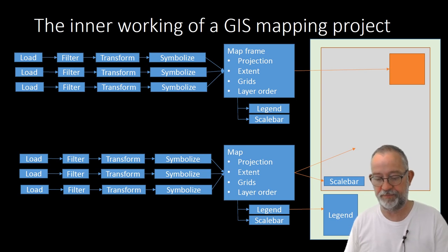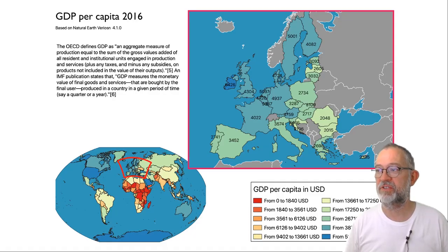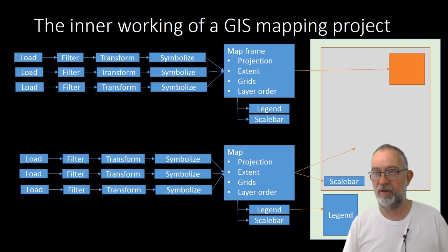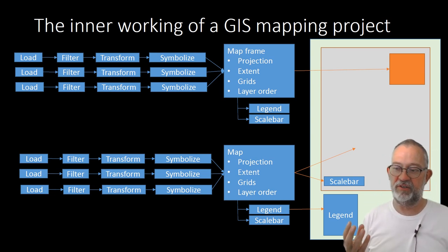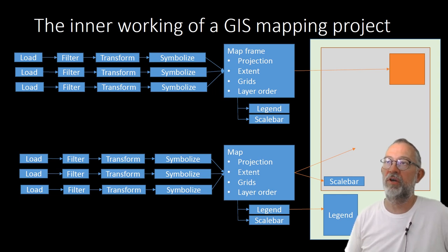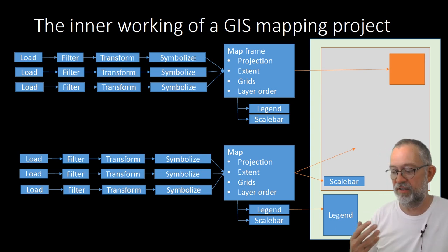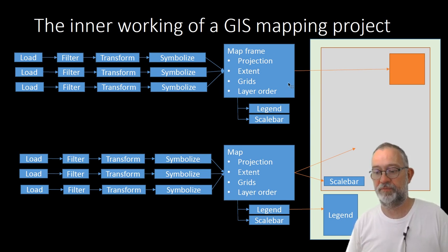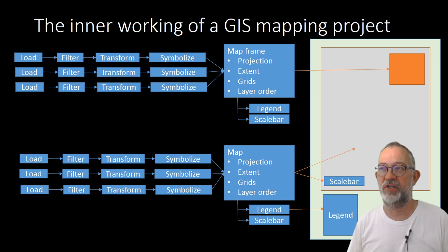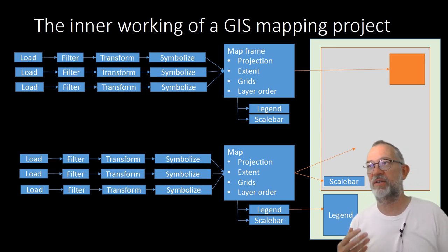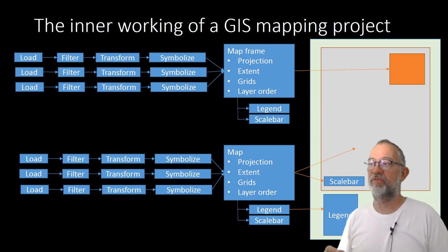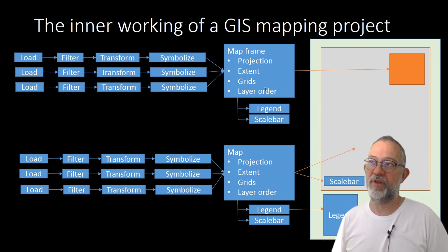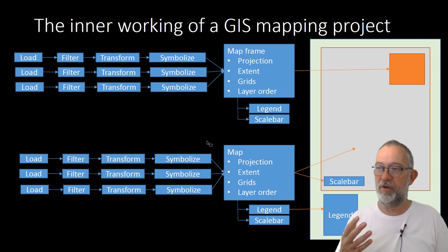In our case, this data is based on GDP per capita. With this dataset, what we have to do is take the GDP and divide by population — there are some transformations we'll be doing. We'll do some symbolization, assigning different colors to different color intervals. And then finally, we'll be arranging the map frames, deciding on the projections, the zoom, the extent, the grids if you want that, layer ordering, and different things that relate to individual map frames. We'll go through that process for two map frames: one for the whole world and one for Europe.